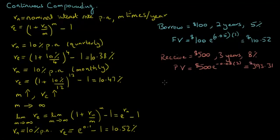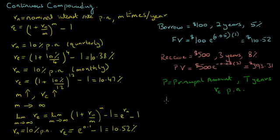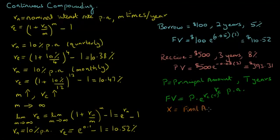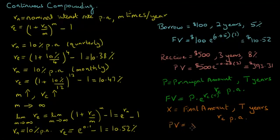We can generalize the argument as follows. If P is the principal amount today that you intend to invest or borrow for T years at a continuously compounded rate of RC per annum, then the future value at the end of T years equals P times the exponential of RC times T. Similarly, if X is the final amount that you expect to receive or repay at the end of T years and the appropriate discount rate is RC per annum, then the present value equals X times the exponential of negative RC times T.